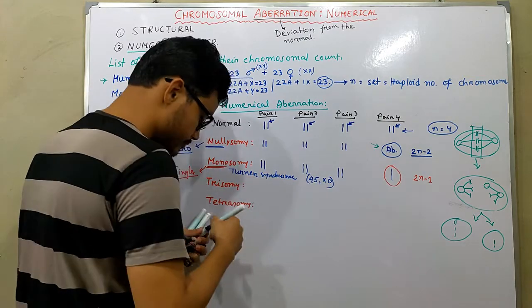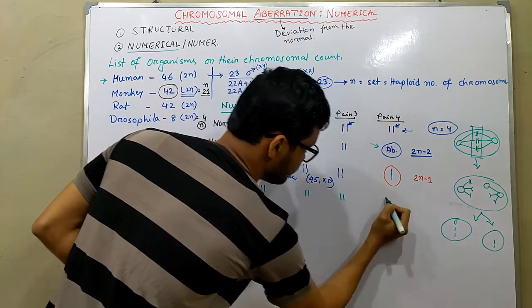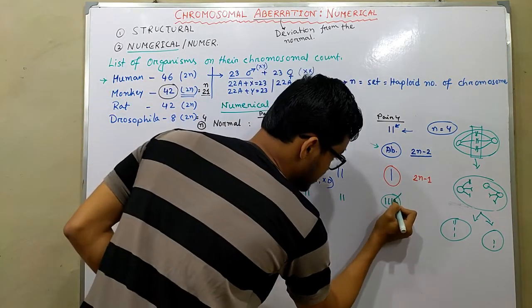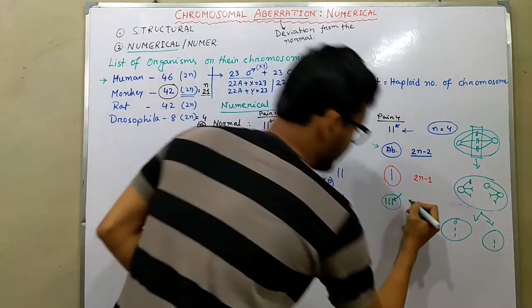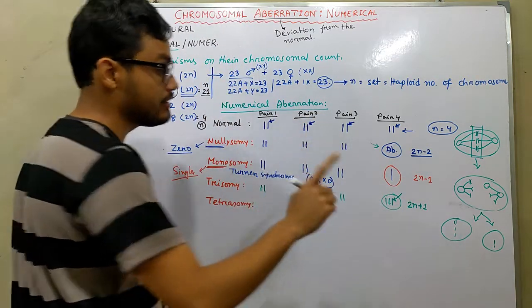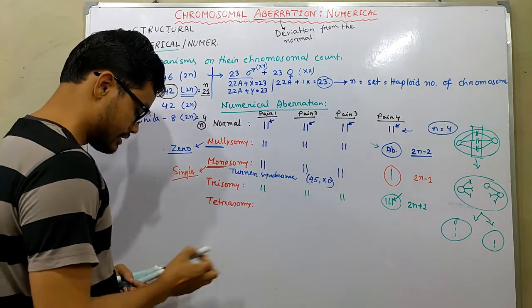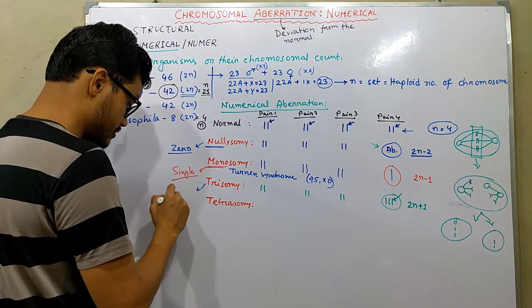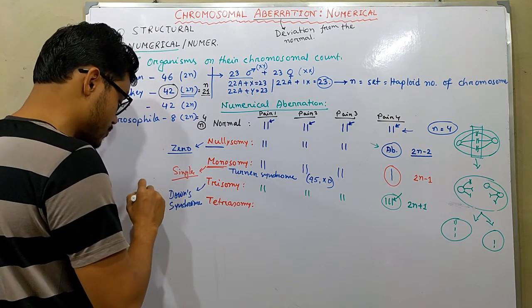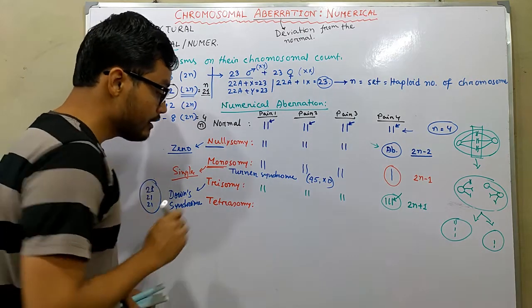In the case of trisomy, one extra chromosome is found in a pair, making it a trisomy condition. One extra chromosome is present in a pair of chromosomes, and it is defined as 2n plus 1, as the number of chromosomes exceeds the diploid number by one. An example of trisomy is Down syndrome, where trisomy 21 is present — chromosome 21 appears three times.